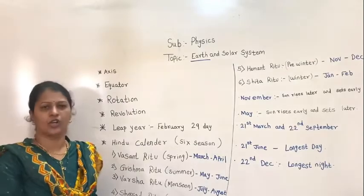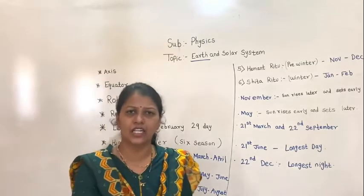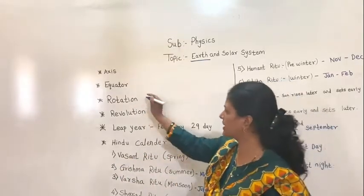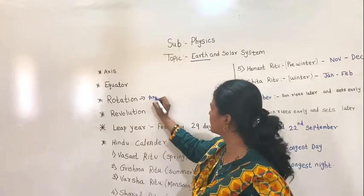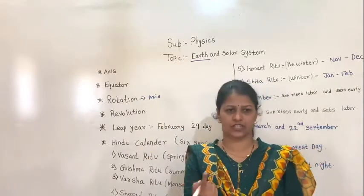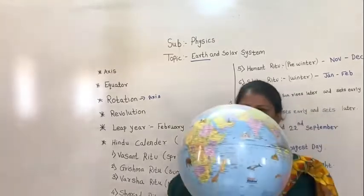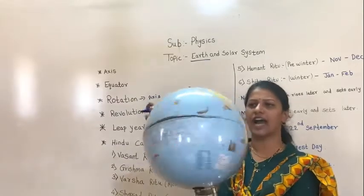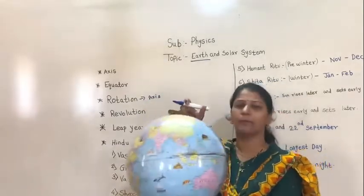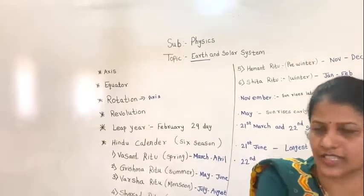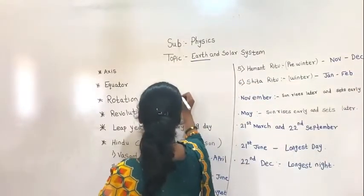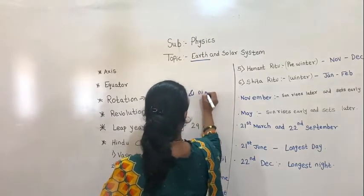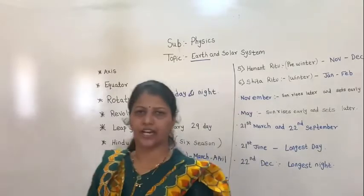Now, rotation. Rotation is the spinning of the Earth around its fixed axis. As this globe spins around its own axis, that is called rotation. Because of rotation, it causes day and night.